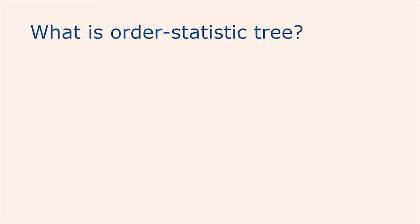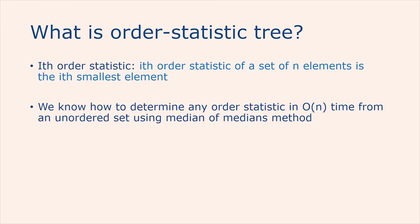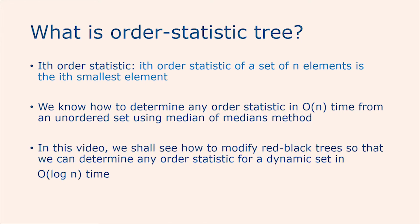Now we will see what is an order statistic tree. The ith order statistic of a set of any element is the ith smallest element. For example, the minimum of a set of elements is the first order statistic and the maximum is the nth order statistic. We know how to determine any order statistic in order of n time from an unordered set using the median of medians method. In this video, we shall see how to modify a tree so that we can determine any order statistic for a dynamic set in order of log n time.